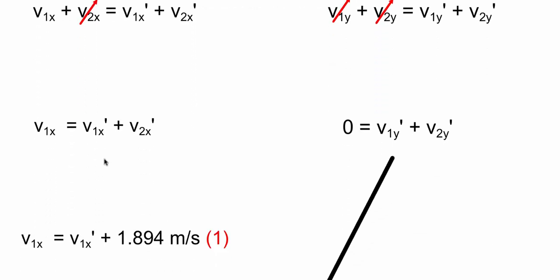So, we actually only know v2x', which is right here. We don't know v1x', so we have two unknowns for this equation, we can't go any further, let's just call it number one.